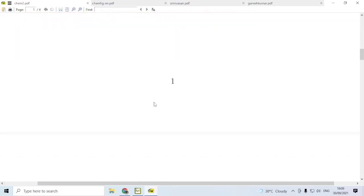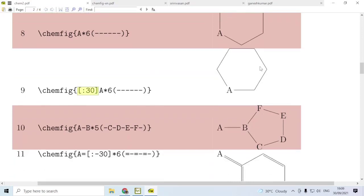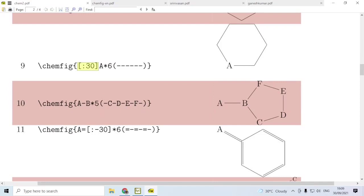Now, if we continue our discussion on this, we can have additional features as shown in line 8. You have A*6, that means you have atom A and then a 6-sided ring. If you add the option colon 30, then the whole figure is rotated by 30 degrees anticlockwise direction. And you can also attach a ring to a bond, a single bond B, and then we have a 5-sided ring like this.